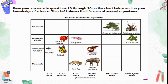Base your answers to questions 18 through 20 on the chart below and on your knowledge of science. The chart shows the lifespan of several organisms: a house fly lives 1 to 30 days; common poppy and butterfly live 1 to 12 months; fox cub and red fox live 1 to 10 years; American lobster and African elephant live 10 to 100 years; Cedar of Lebanon lives 100 to 1000 years; and bristle cone pine and English oak live over 1000 years.